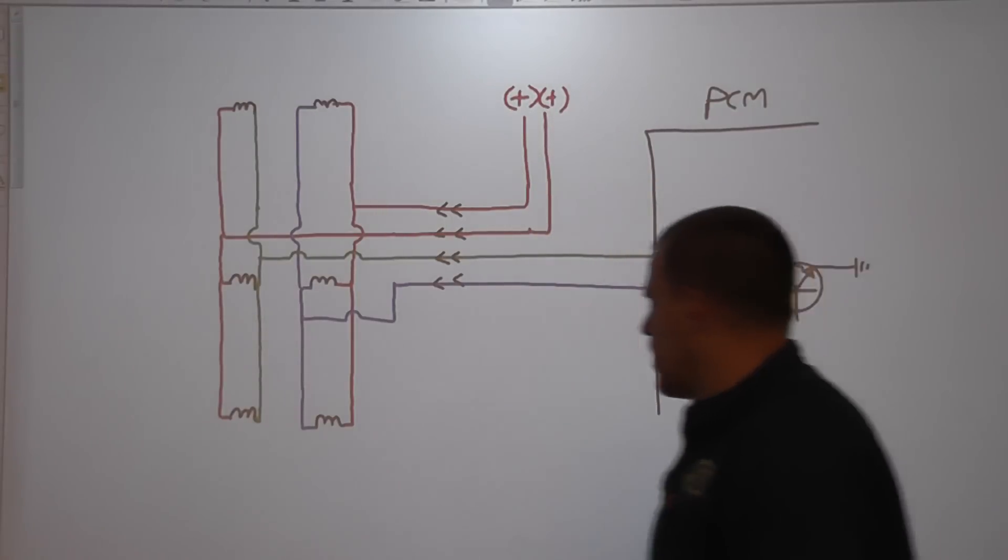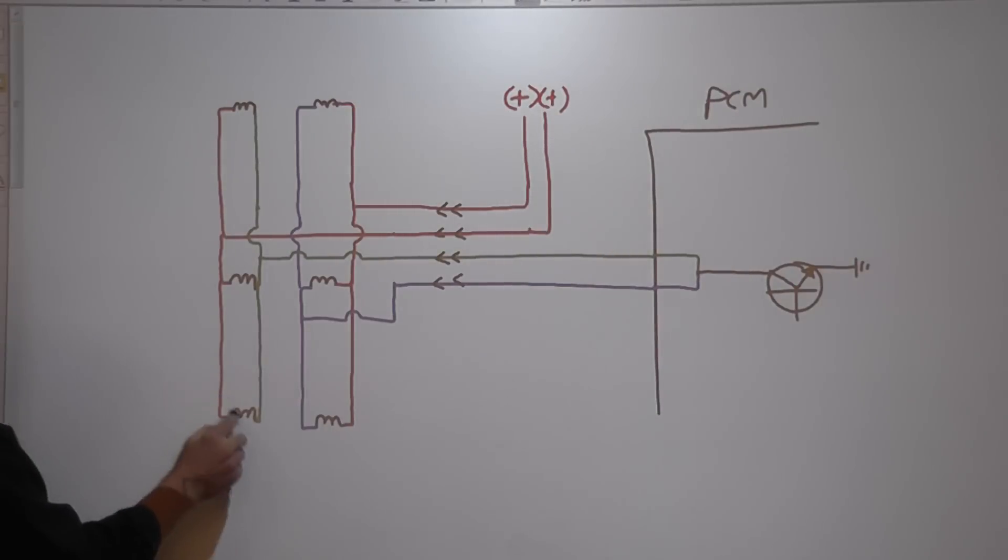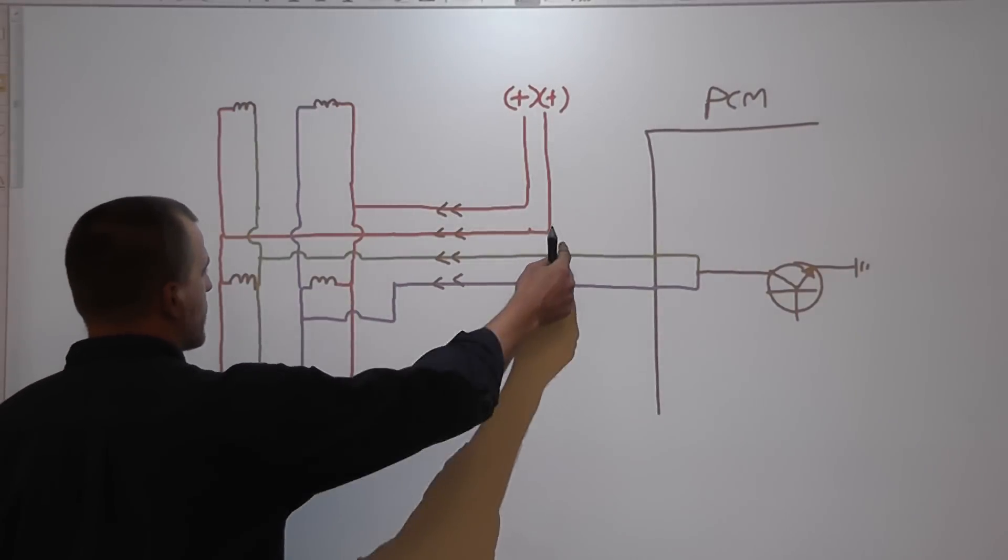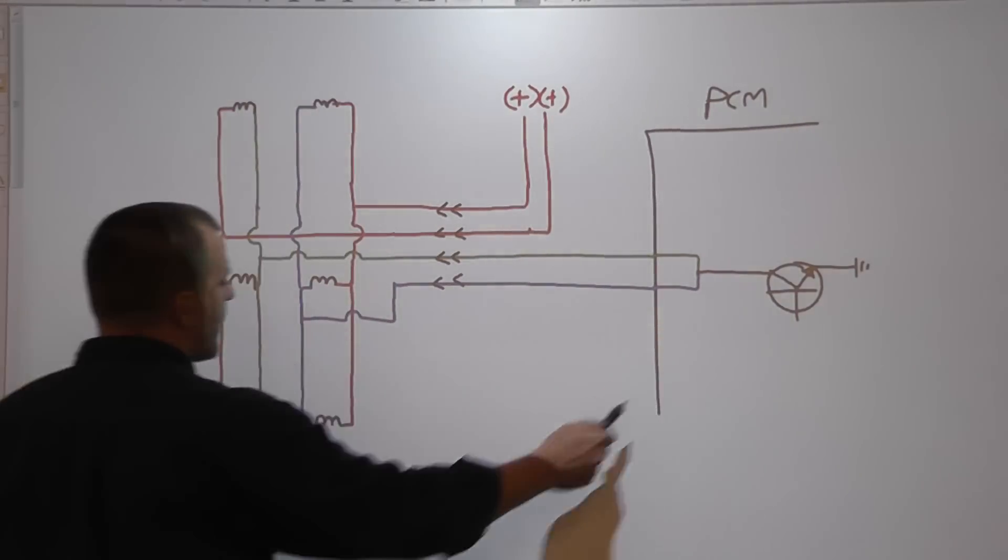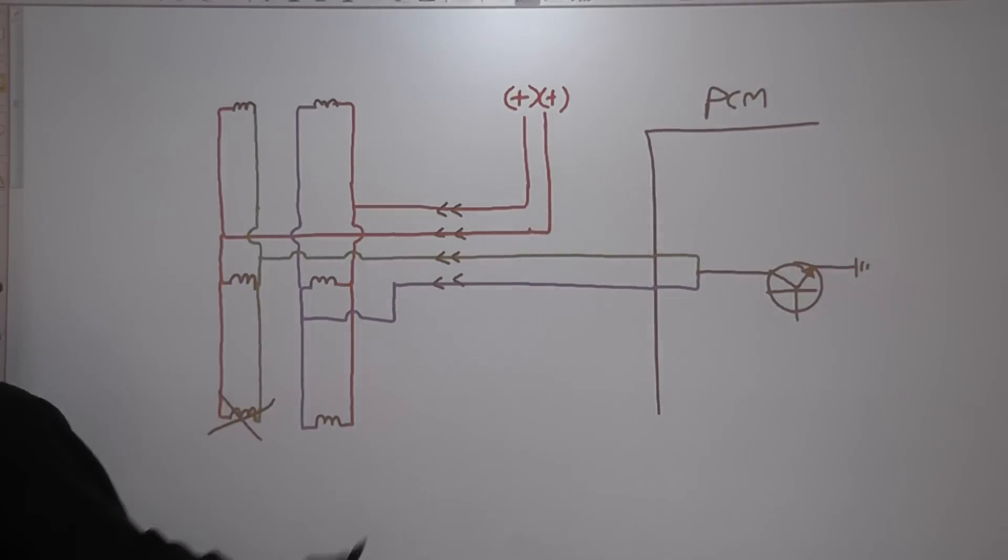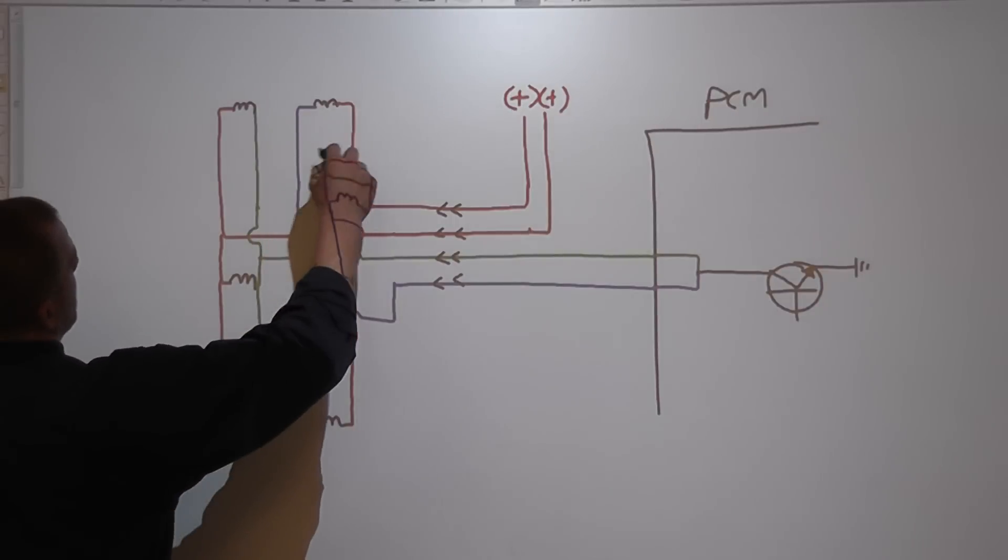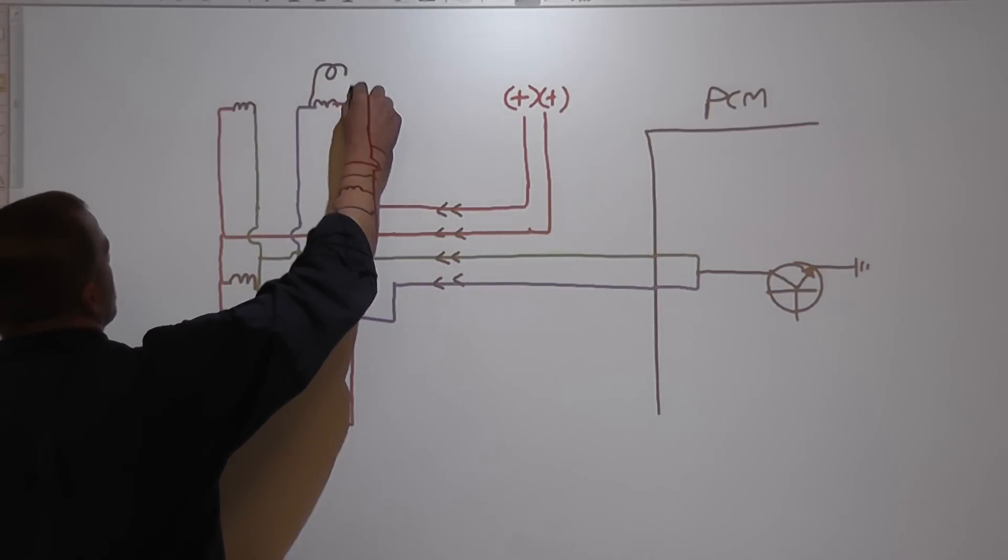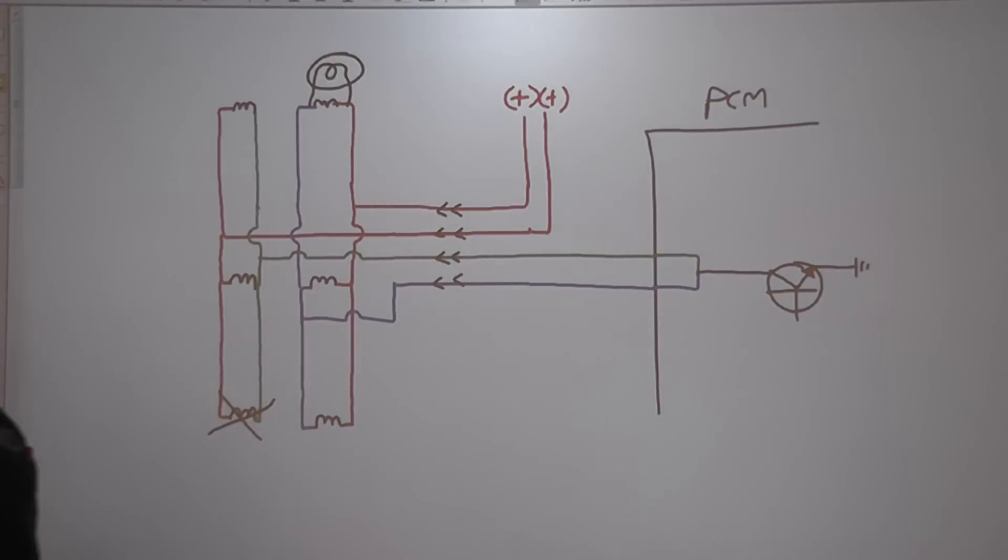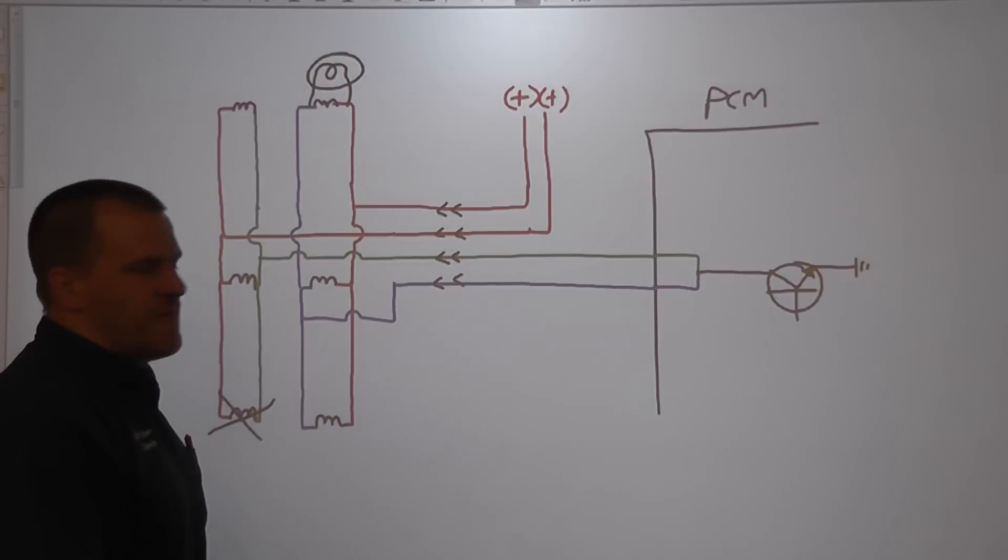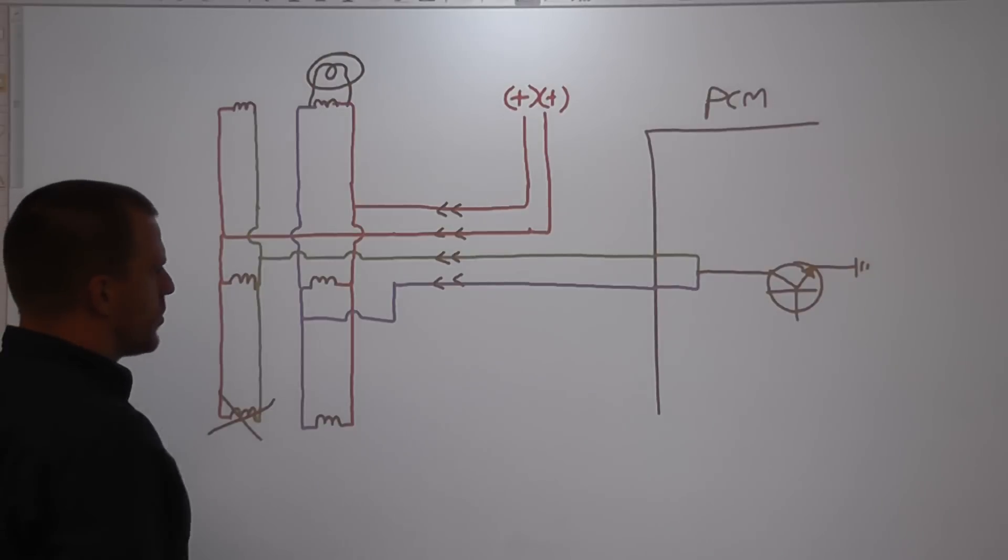And that explains why our one shorted injector, which was actually this one right here, would affect the entire system. Even though there's two different control wires, one driver, that injector is overloading this driver and preventing all these other injectors from firing. Even when we put the NOID light in, which was over here, we installed a NOID light on this injector, it wouldn't even flash the NOID light. That's how much the other circuits involved in this parallel group were not functioning, and that's from one shorted injector.